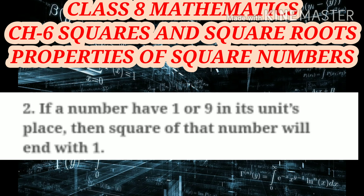Now we move to the next property of square numbers. If a number has 1 or 9 in its units place, then the square of that number will end with 1.